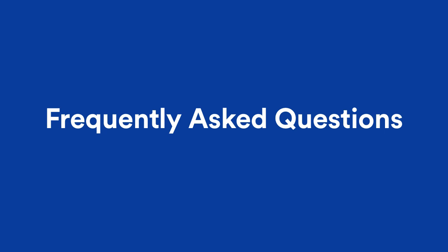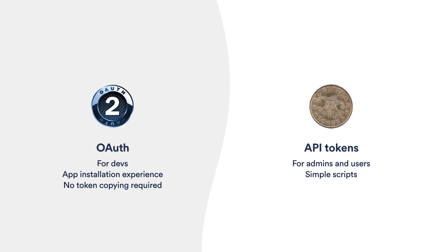Before finishing up, I'll go through a couple of frequently asked questions. Firstly, with OAuth being the gold standard covering all cases, why would we use API tokens at all? It comes down to different use cases. OAuth is really targeted for developers and apps — it gives you an application installation experience and you don't have to get users to copy and paste tokens from one place to another. On the other hand, API tokens are for admins and users who want to run simple scripts or hit APIs in a one-off manner — it's really easy for them to just get an API token rather than have to create an OAuth client and bring in OAuth libraries just to do a simple task.